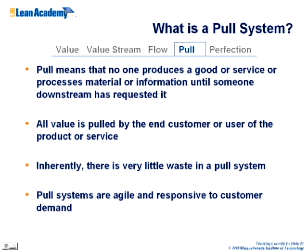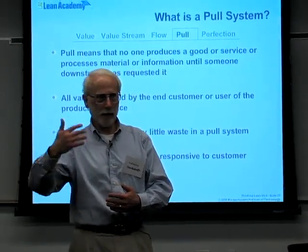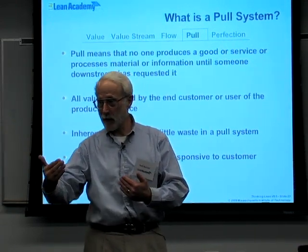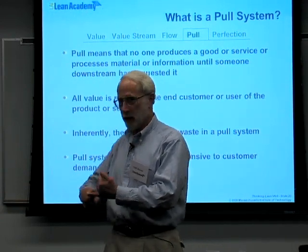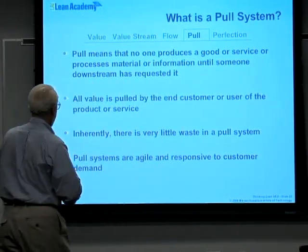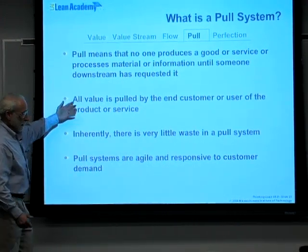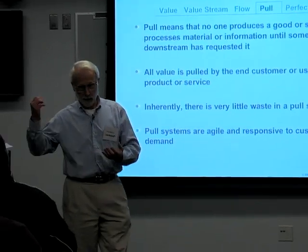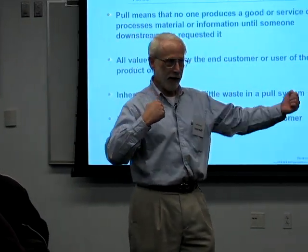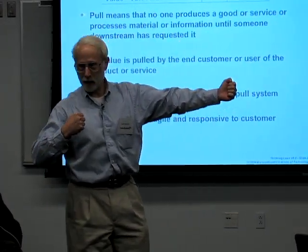After achieving flow, you want to get to pull — customer pull. No one produces a good or service until someone downstream requests it. At New Balance, when they found they produced more than needed, they stopped production until it was needed, because excess production goes into inventory which costs money — you have to put it in, take it out, rent space, and it gets obsolete. The ideal system is almost what we saw: the customer goes to the store, asks for New Balance shoes, New Balance makes them tomorrow and ships them out.